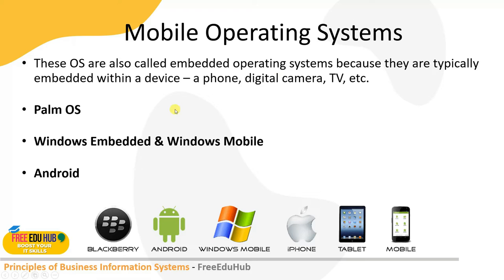Mobile operating systems are also called embedded operating systems because they are typically embedded within a device like a phone or digital camera. Examples include Palm OS, Windows Mobile, Android, and iOS. Nokia used to use the Symbian operating system; Android is used in most devices today, and Apple's iOS is available in most tablets and mobile phones.